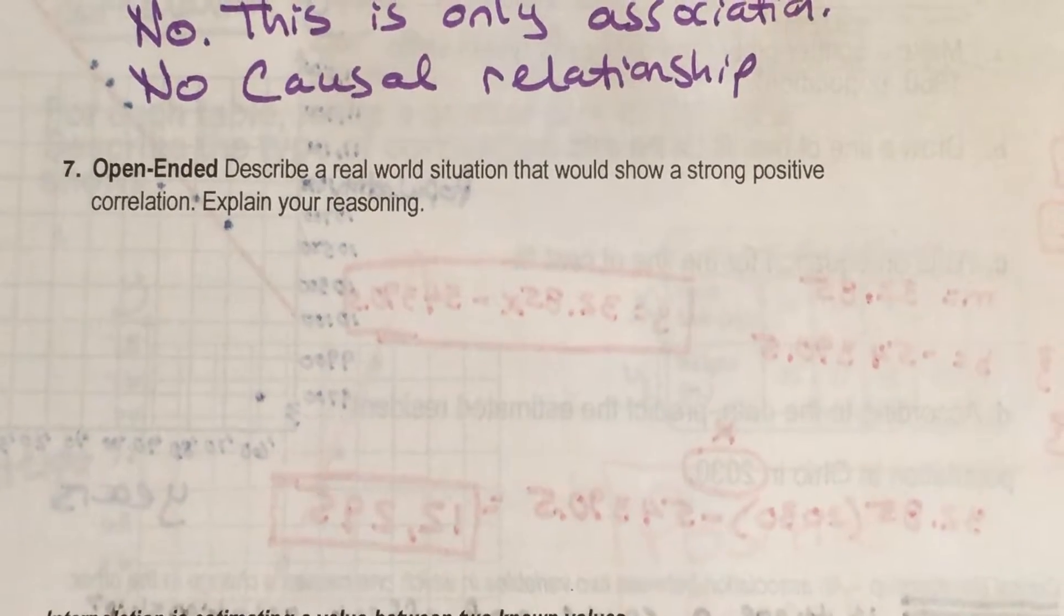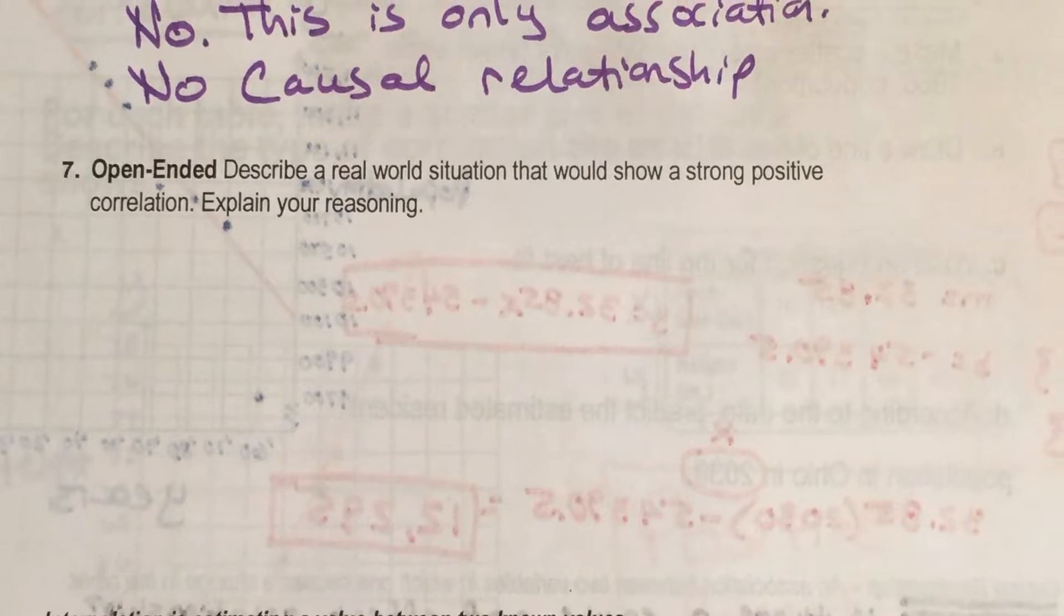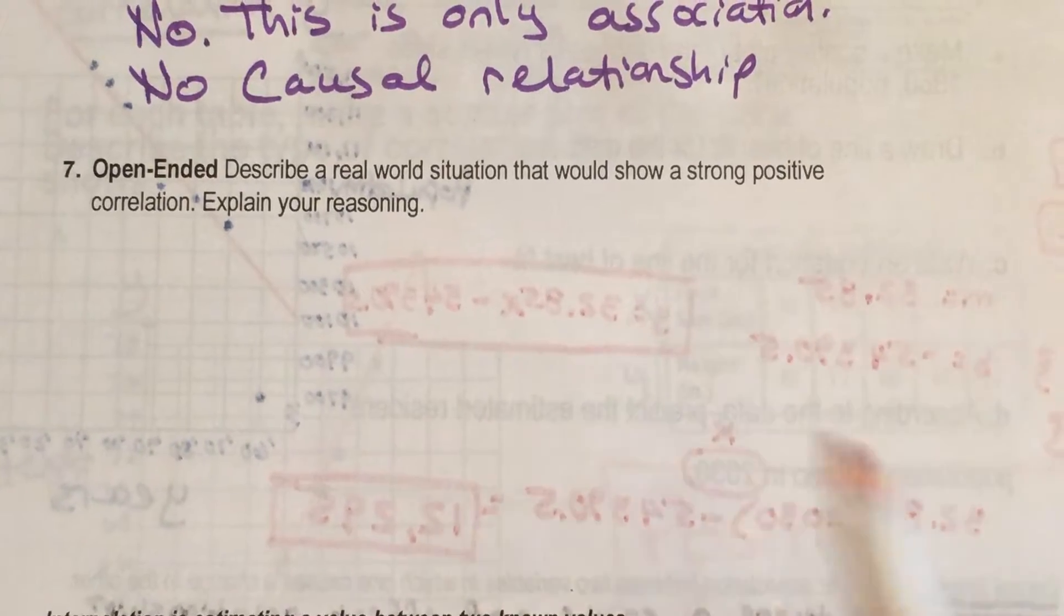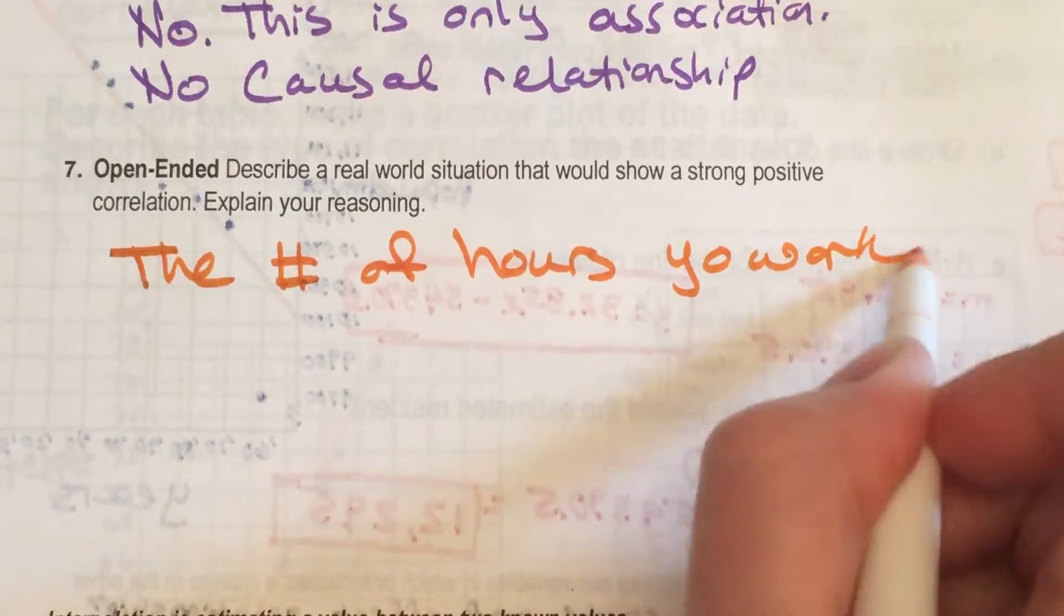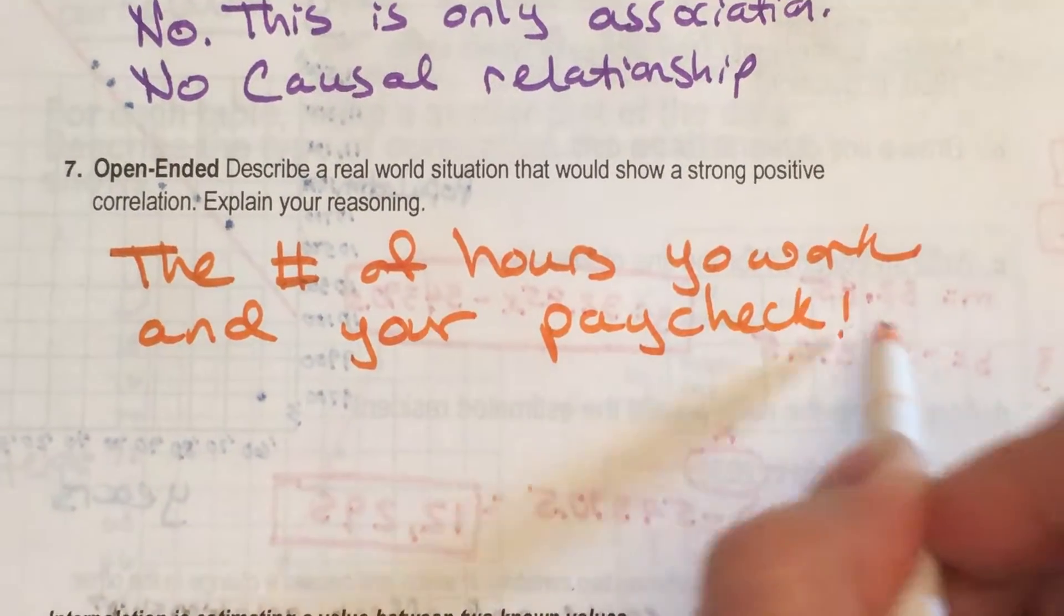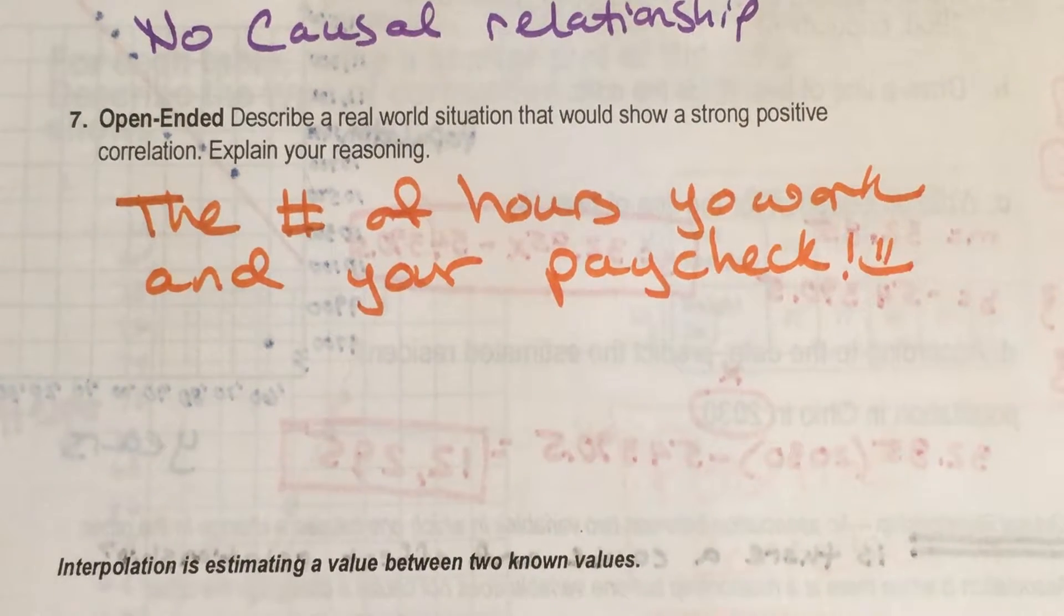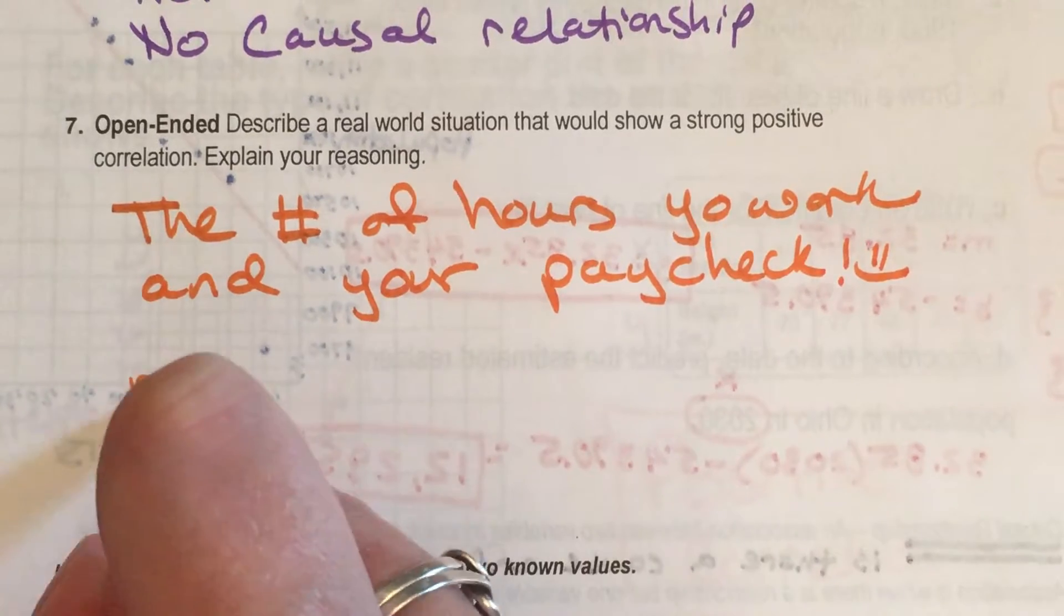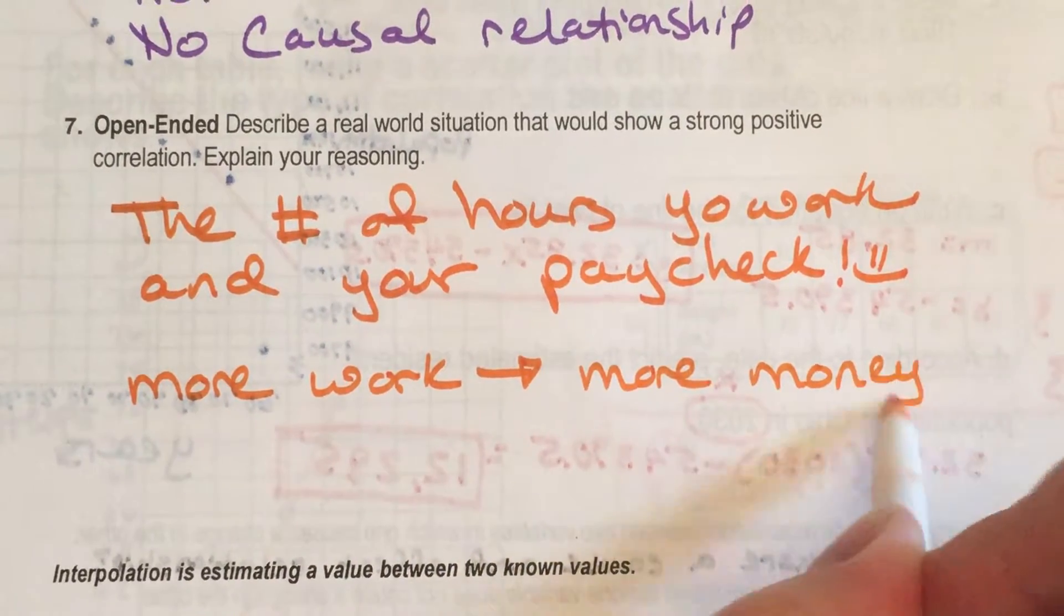All right. So number seven, describe a real world situation that would show a strong positive correlation. Explain your reasoning. So what did we talk about just a minute ago? The number of hours that you work and your paycheck. Yeah. Everybody likes to have a bigger paycheck. Yeah. Then we can go play more and pay more bills, but hey, it's good to keep the lights on. So the more you work, the bigger paycheck you should get.